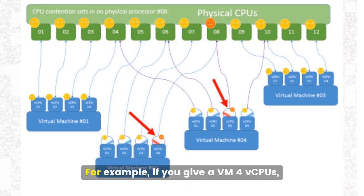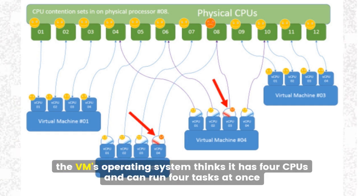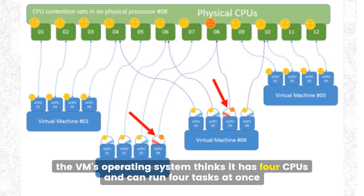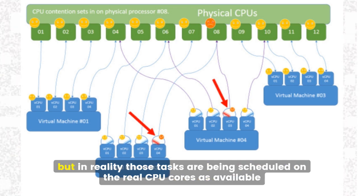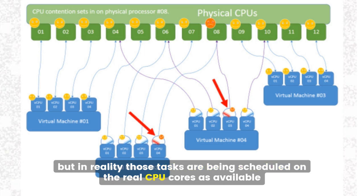For example, if you give a VM four vCPUs, the VM's operating system thinks it has four CPUs and can run four tasks at once. But in reality, those tasks are being scheduled on the real CPU cores as available.